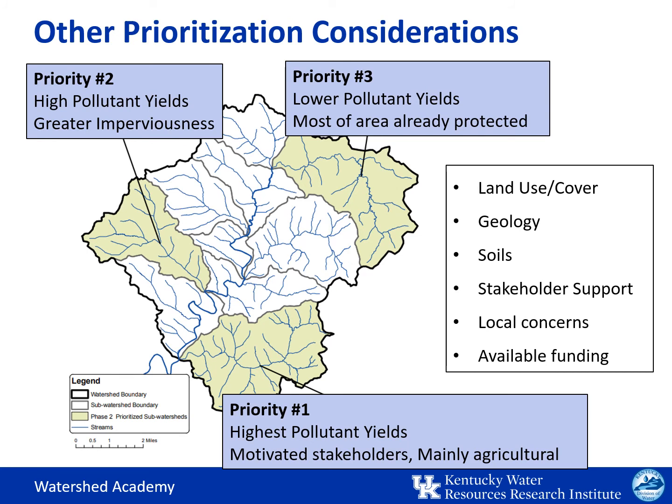Final prioritization should also consider other contributing factors in each subwatershed. These include land use and land cover characterization, which will help you decide what types of BMPs will be needed to address the prevailing land uses. You might also want to know if much of the watershed area is already protected as public or forested lands. Geological characteristics can make a difference, such as if the geology is favorable for karst formations that could allow for underground pollutant flows into or out of the watershed area, making it more difficult to track.